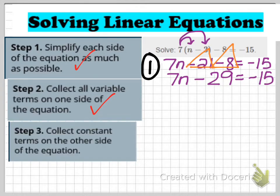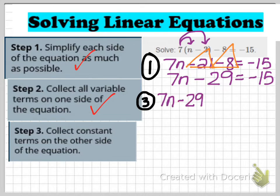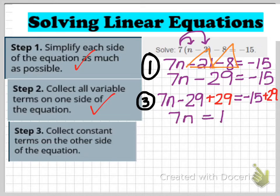Now step 3 — I want to collect constant terms on the other side. I've designated the left side as where my variable lives, so I want the right side to be where all the constants go. To do this, I add 29 to both sides. That makes negative 29 plus 29 equal zero on the left, leaving 7n all by itself. So now I have 7n equals 14, since negative 15 plus 29 is 14. I'm done with step 3.